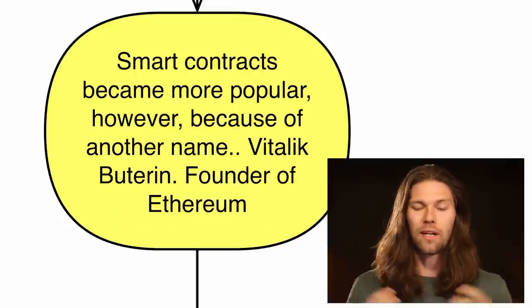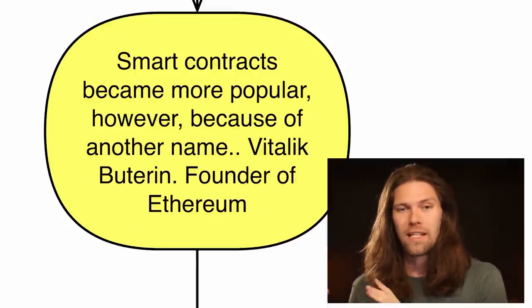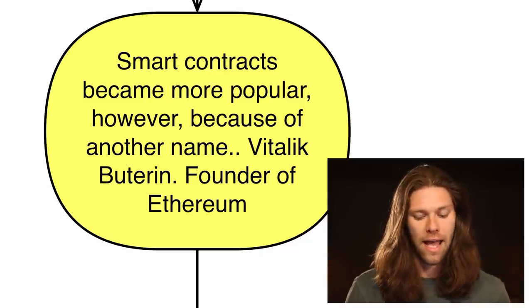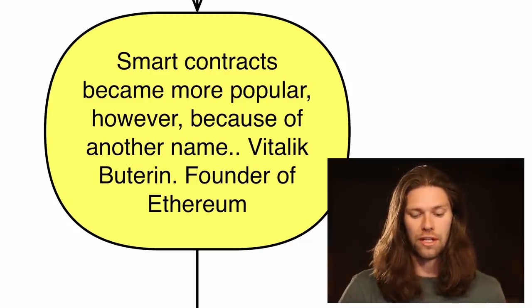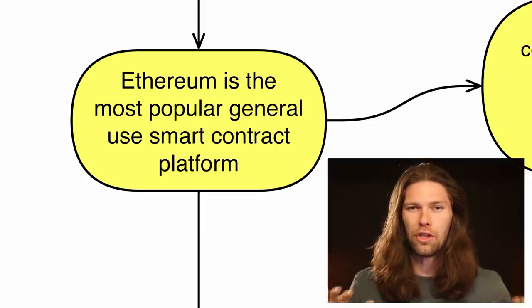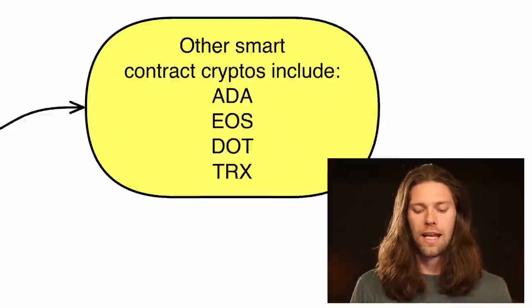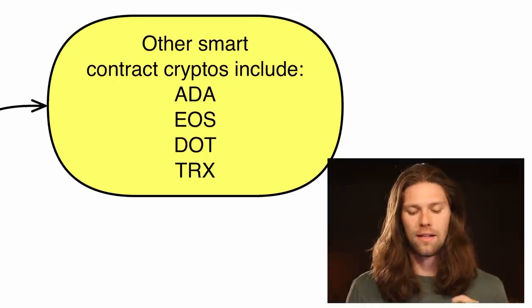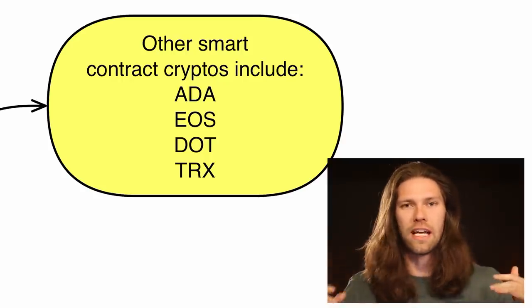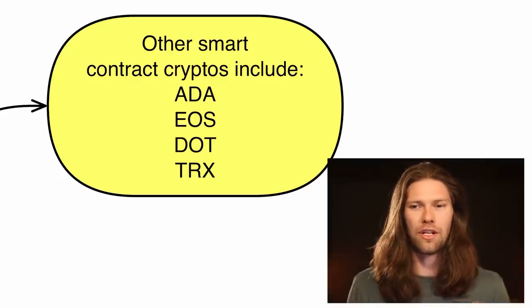Smart contracts became more popular because of another man, Vitalik Buterin, who is the founder of Ethereum — an absolute genius as well. Ethereum is the most popular general use smart contract platform, but there are other options including ADA, EOS, DOT, and TRX, all in various stages of their smart contract implementation.